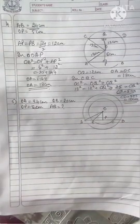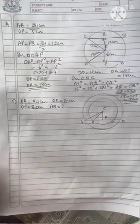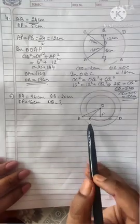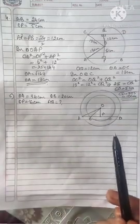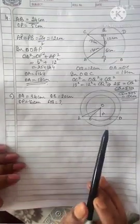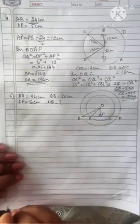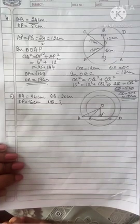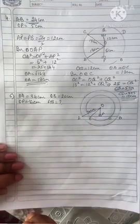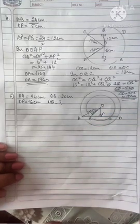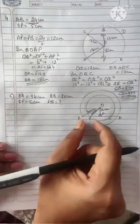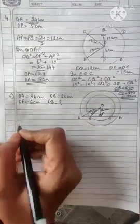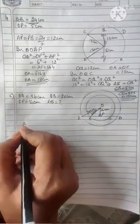The fifth problem involves a figure with a concentric circle — circles with different radii but the same center. AD is a straight line, OP is perpendicular to AD, O is the center of both circles. Given OA equals 34 cm, OB equals 20 cm, and OP equals 16 cm, find AB. There are two right-angled triangles: triangle OAP and triangle OBP.